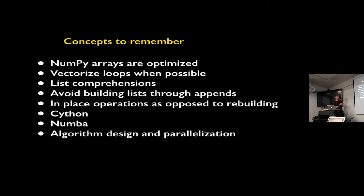There are some additional optimization tools worth mentioning. Cython is a Python-like language that compiles down to C code, which is extremely fast, requiring only a few additional steps in your Python code. Numba is another option — you just put a decorator over your function and it compiles it; in some cases it was a little bit faster, especially if the function is small enough. Algorithm design and parallelization can help dramatically, which will be covered this afternoon.